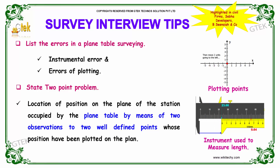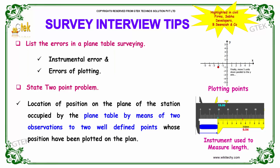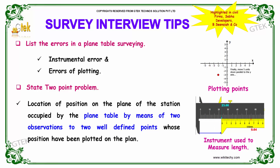We have to list the errors in plane table surveying. Some of the errors in plane table surveying are as follows: instrumental error and errors of plotting. These are the two errors in plane table surveying — it can be either because of the instrument or human-made errors of plotting.